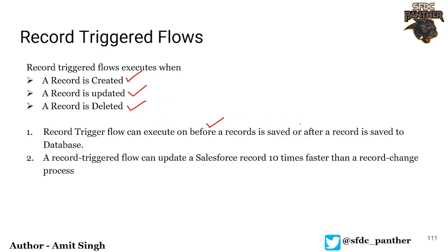A record-triggered flow can be executed before a record is saved or after the record is saved into the database. That means you can have two types: before a record saves and after a record saves. Before a record saves is much faster than process builders or flow builder, because before the record is saved it is updating the value of the same record — which is 10x faster.